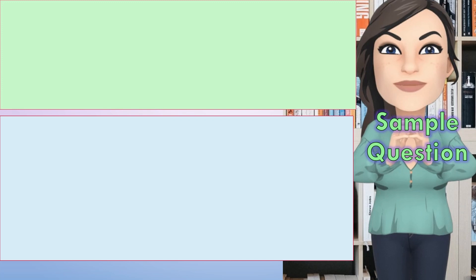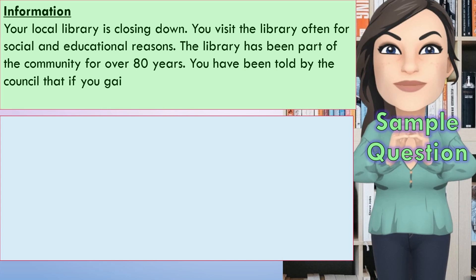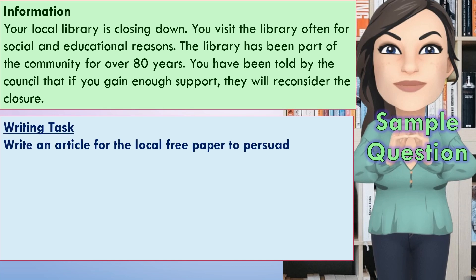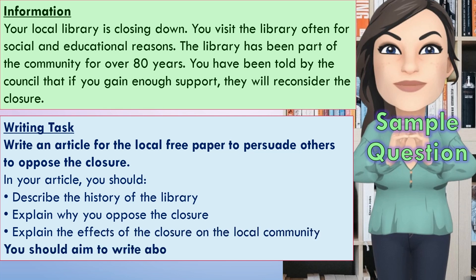Let's look at a sample question. Remember, this is the functional skills level one writing exam. You will get some information — in this case: your local library is closing down, you visit the library often for social and educational reasons, the library has been part of the community for over 80 years, and you've been told by the council that if you gain enough support, they will reconsider the closure. The task is to write an article for the local free paper to persuade others to oppose — that is, go against — this closure. In your article you should describe the history of the library, explain why you oppose the closure, and explain the effects of the closure on the local community. You should aim to write about 150 to 200 words.